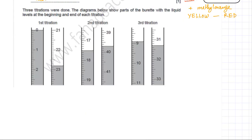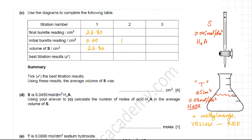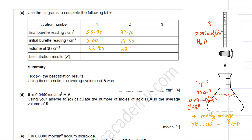For the second titration, the initial burette reading was 17.50 cm³ and the final reading was 39.70 cm³. The difference between these two values gives the volume of acid added: 39.70 minus 17.50 equals 22.20 cm³. So in the second titration, the volume of S added into the flask is 22.20 cm³.